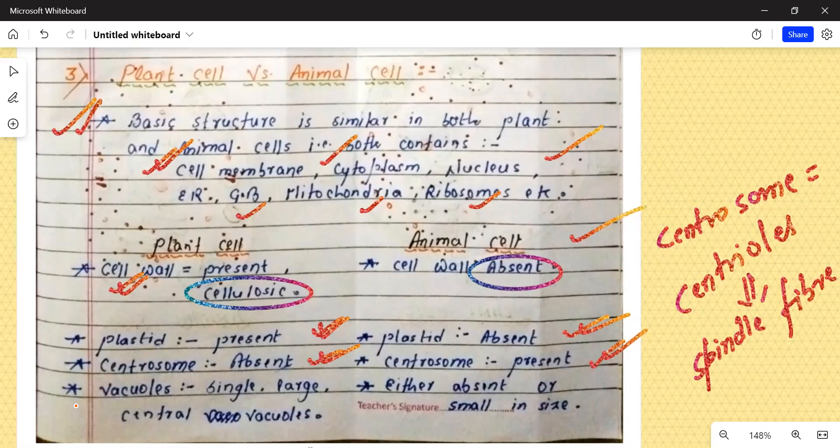In case of plant cell, vacuoles. Vacuoles jo hote hai, woh single hote hai, aur kaafi bade size ke hote hai, single and large. But in case of animal cell, ya toh aapke vacuoles absent hote hai, ya phir bahut chhote size ke hote hai.